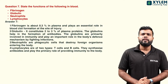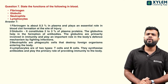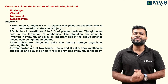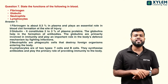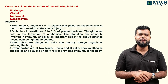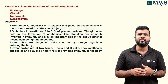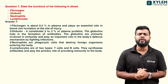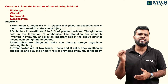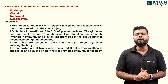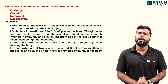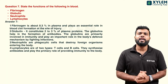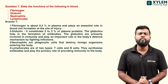Next question: state the functions of the following in blood — fibrinogen, globulin, neutrophils, and lymphocytes. The function of fibrinogen: fibrinogen is very important for blood clotting. Fibrinogen is converted to its active form, fibrin.